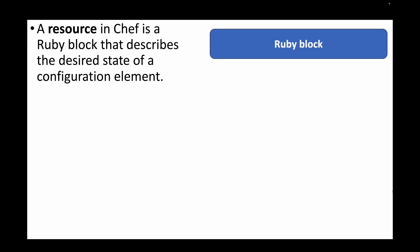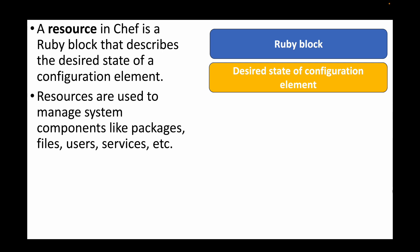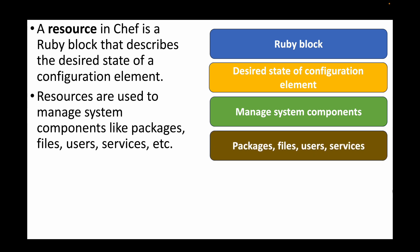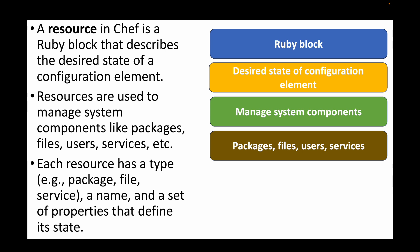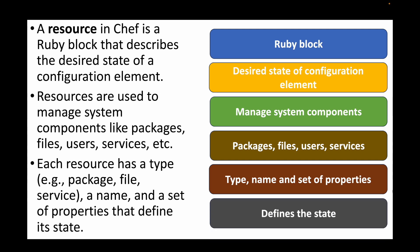The next question is: what is a resource in Chef? A resource is simply a Ruby block that describes the desired state of a configuration element — basically what you want to manage. Resources can be used to manage system components such as packages, files, users, and services. Each resource has a type, a name, and a set of properties that helps define the state of the system.